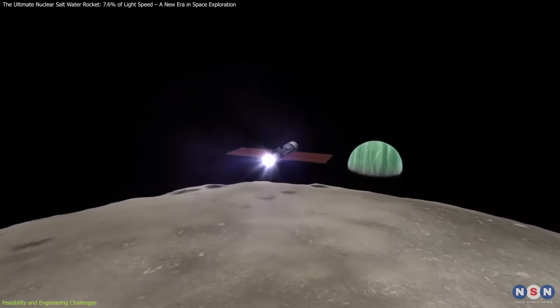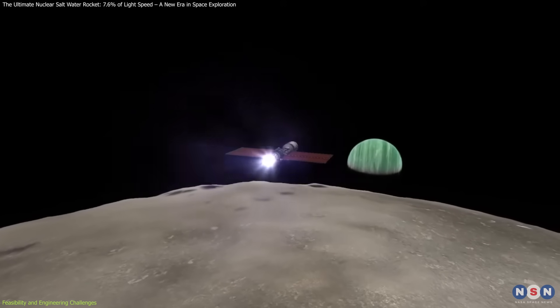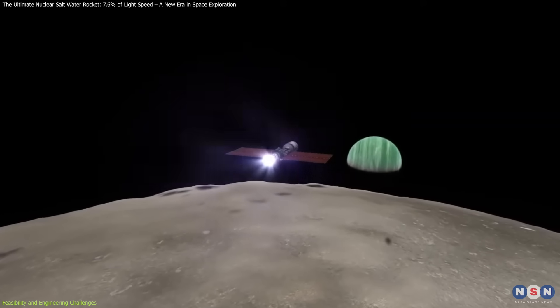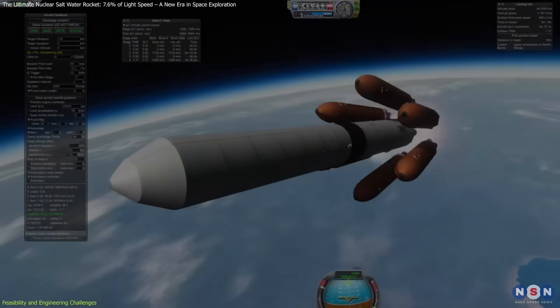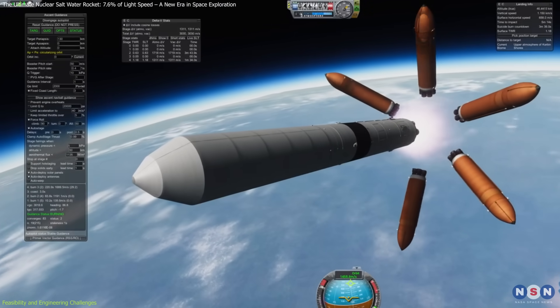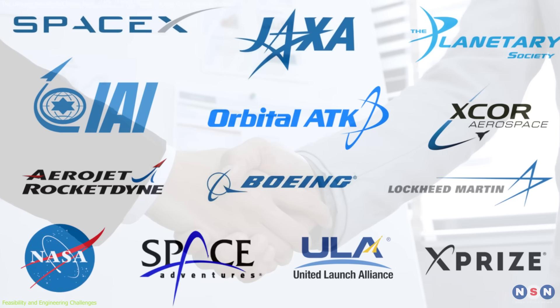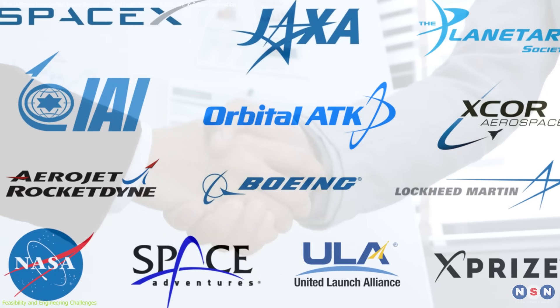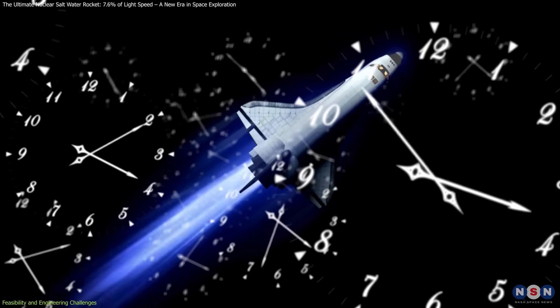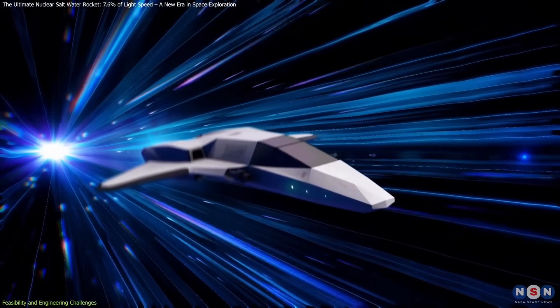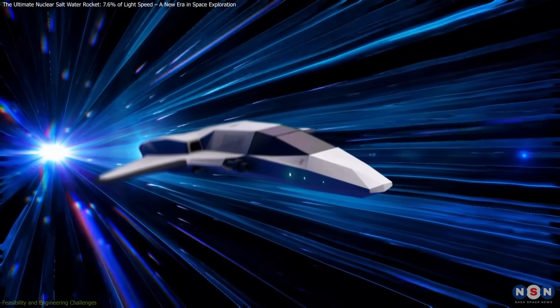With this roadmap, this rocket could become a reality within the next 15 to 24 years, assuming funding and research progress smoothly. However, if we leverage advanced simulations, regulatory collaborations, and international partnerships, this timeline could be shortened by at least five years, bringing interstellar travel within reach sooner than we ever imagined.